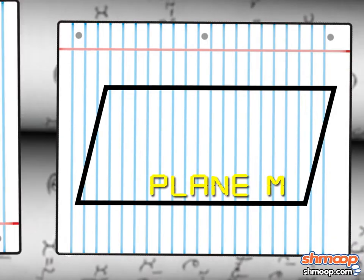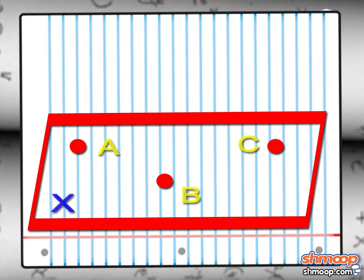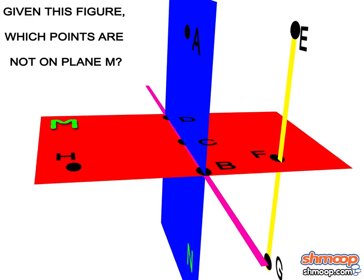That's plane M. Just as any two points define a line, any three points can define a plane. Yep, that's the reason tripods don't wobble nearly as much as bipods do. And that's also why bipods don't really exist. So, given this figure, which points are not on plane M?